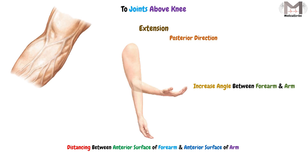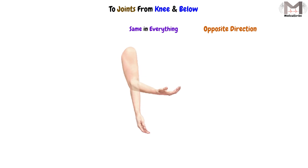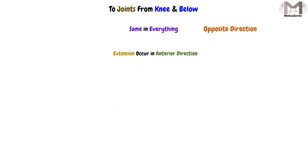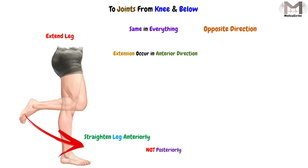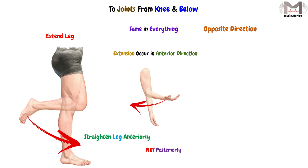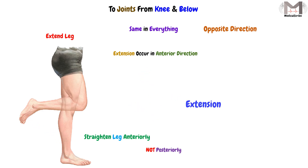In joints from the knee and below, extension is the same in principle but occurs in the opposite direction. Instead of moving posteriorly as in usual extension, here the movement is anterior. When we extend our leg, we straighten it anteriorly, not posteriorly, in contrast to extension at the elbow. The key point is that extension means straightening or extending the joint.